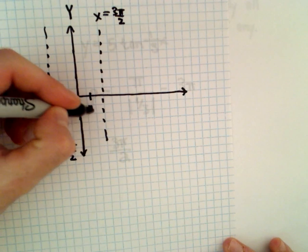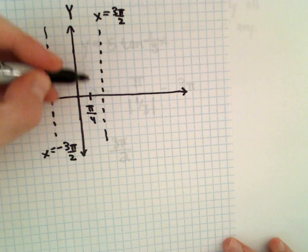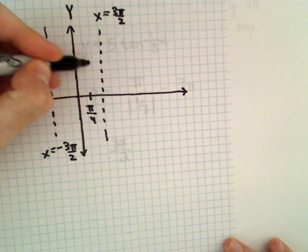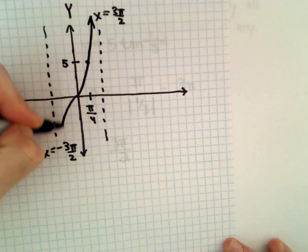And we can fill in one point if we want to. So normally at pi over four it goes through one, but now at pi over four it's going to go through five. It still has that same general shape to it.